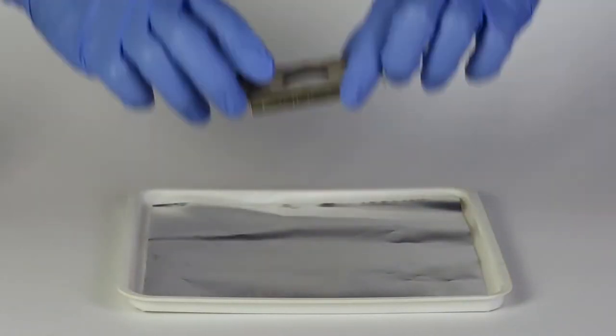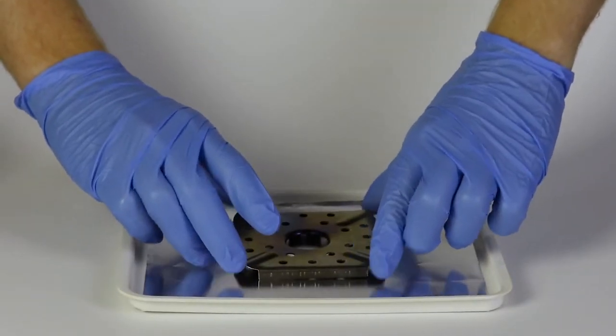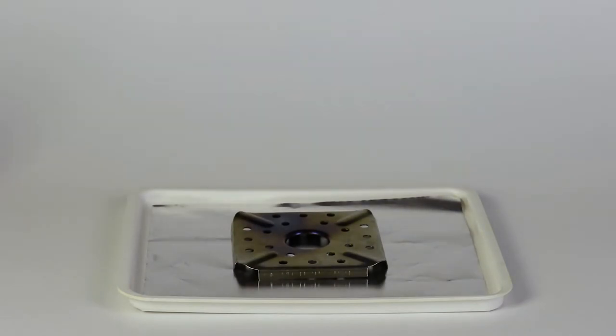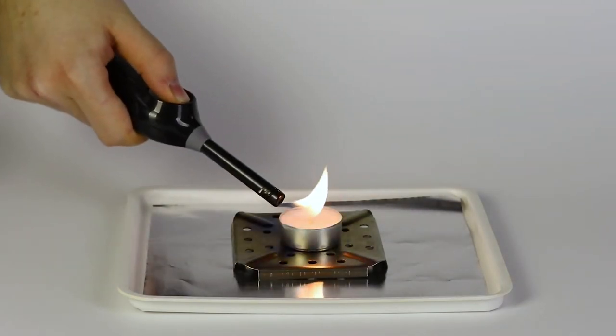Put the foil on the plastic tray and hold it down with the flame diffuser. Then put the candle on the flame diffuser. Light the candle.